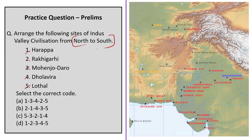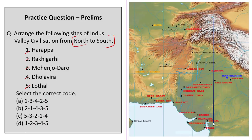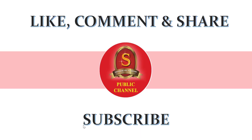The third question asks us to arrange five Indus Valley Civilization sites from north to south. Using the map for reference: Harappa is the northernmost, followed by Rakhigarhi, then Mohenjo-daro, then Dholavira, and finally Lothal as the southernmost. So the correct arrangement from north to south is Harappa, Rakhigarhi, Mohenjo-daro, Dholavira, Lothal — making Option D the correct answer. This concludes all sessions. If you liked the video, please like, comment, share, and subscribe to Shankara IAS Academy's YouTube channel for more updates on civil service examination preparation.